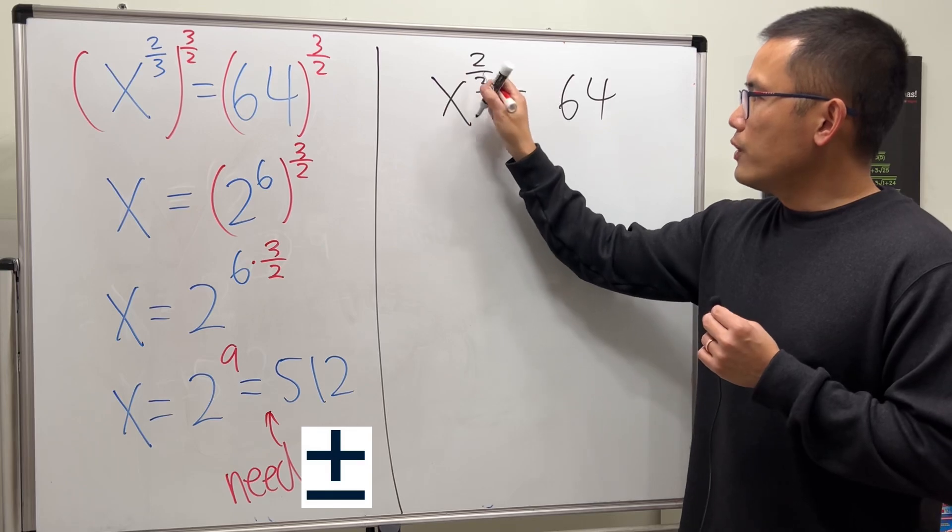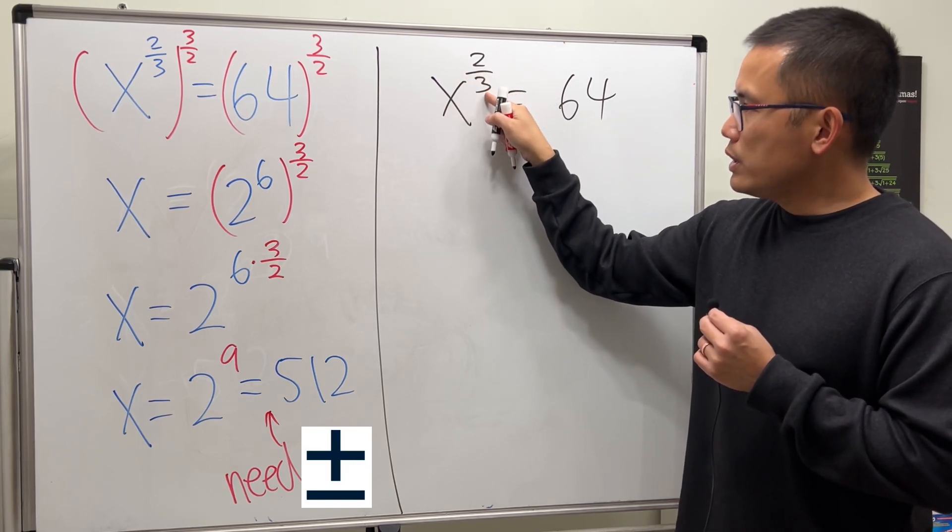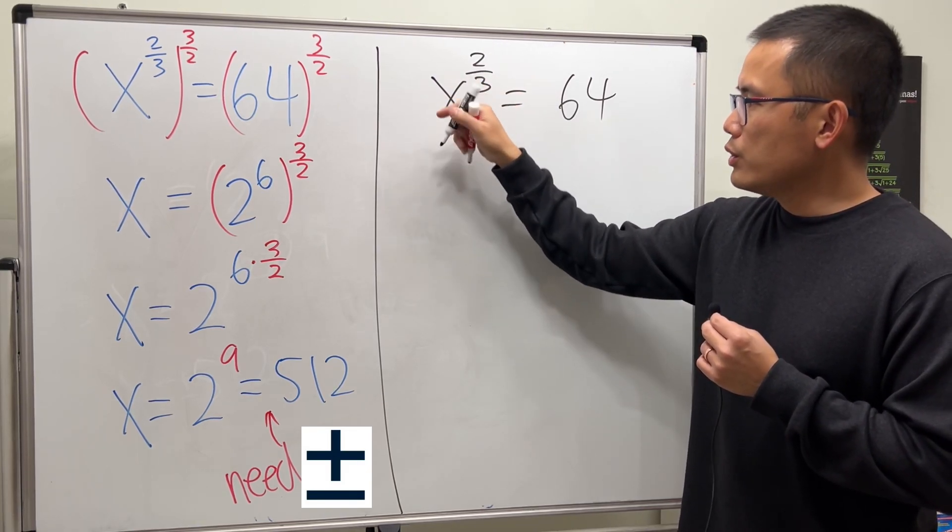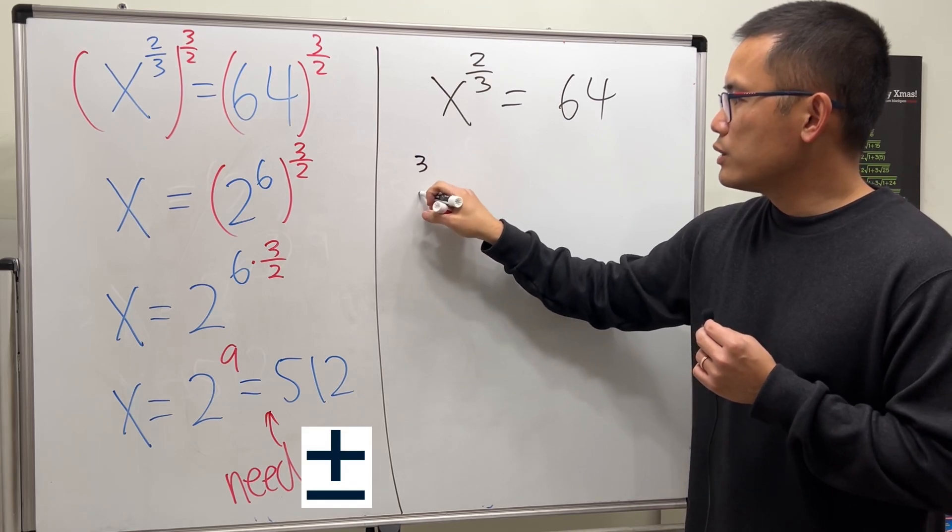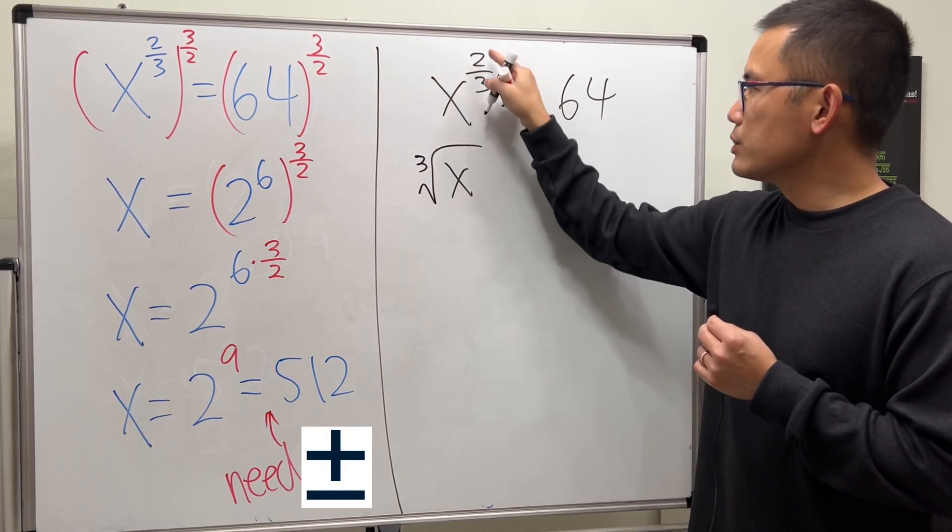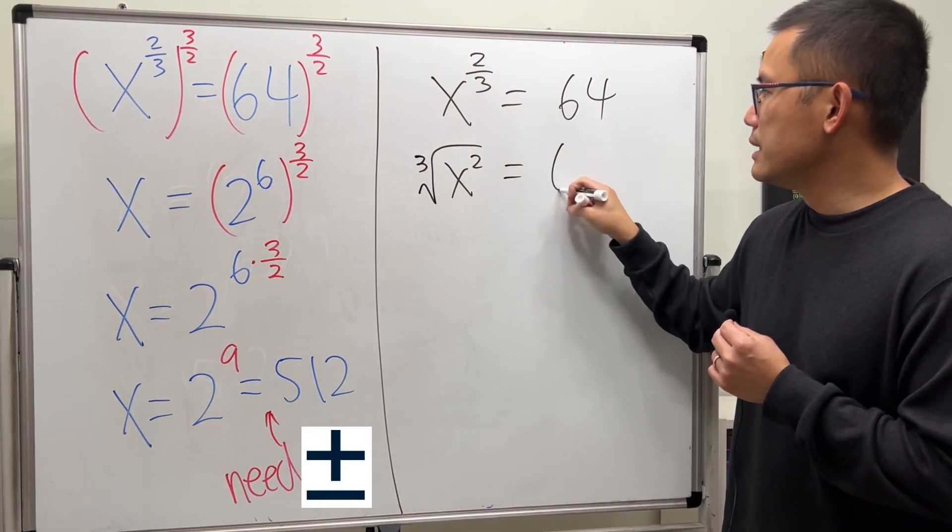If you first change the 3 from the exponent right here into a radical, then you get the cube root of x to the second power equals 64.